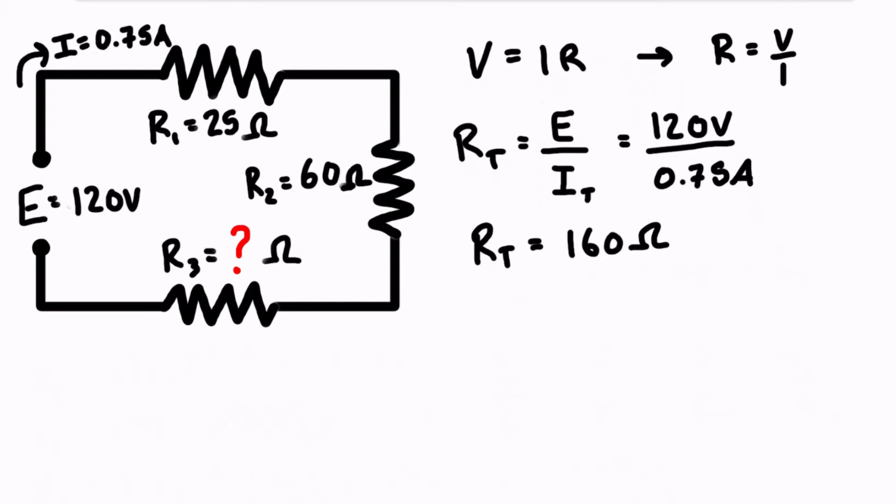Then to solve for resistor 3 all we need to do is use our series resistor equation which is the total resistance is equal to the sum of all of the individual ones so R1 plus R2 plus R3.